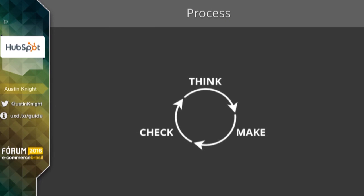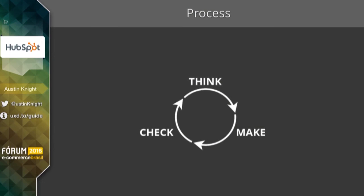This is what my personal UX process looks like, and it's the process I brought to HubSpot. It's a circle — it actually happens in cycles, it's iterative — and there are three phases: Think, Make, and Check. This may be familiar to some of you because this is actually a process called Lean UX. There was a book written about it by Jeff Gothelf, and you can actually pick that up in Portuguese and read all about the stuff I'm going to go into here today.